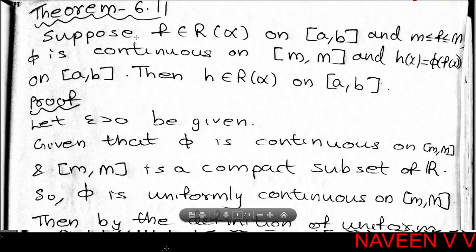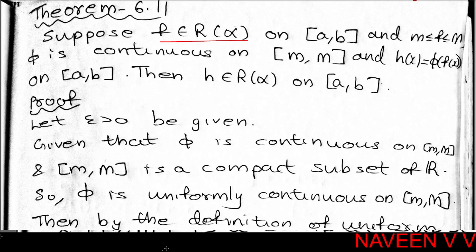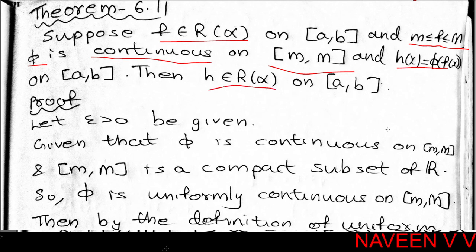Theorem 6.11: Suppose f belongs to R(α) on closed interval [a, b], and m ≤ f ≤ M. φ is continuous on closed interval [m, M], and h(x) = φ(f(x)) on [a, b]. Then h belongs to R(α) on closed interval [a, b] — that is, h is Riemann-Stieltjes integrable with respect to α over [a, b].